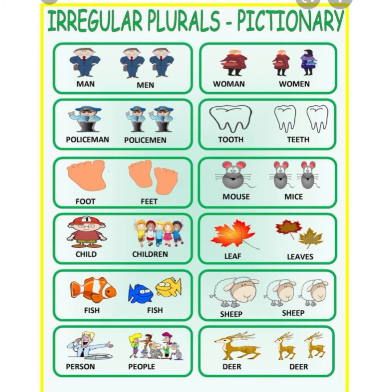Policeman becomes policemen. Tooth — one gigi is tooth, many gigi is teeth. One foot becomes two feet — stamp your feet! One mouse becomes mice — banyak tikus kita tak panggil mouses, kita panggil mice. Child — one child, but five children, we say children. Ingat, 'f' kat belakang berubah jadi 'ves' — semua kena hafal.